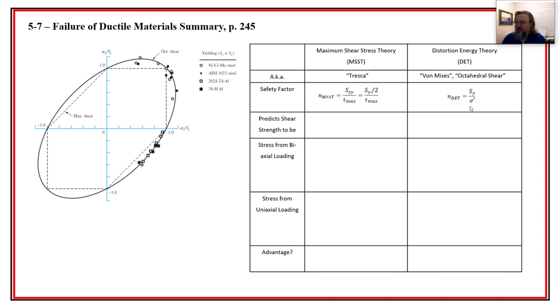And the safety factor for distortion energy theory is simply the yield strength divided by von Mises stress. And why is that? Because we've actually converted our stress state into something that's pretty much equivalent. Sometimes we'll even say the effective stress. That's also another name for it. Because we've converted our stress state into something that is nearly as equivalent as we can make it to what happens in the pull test.